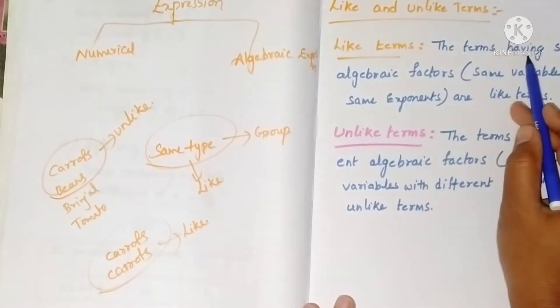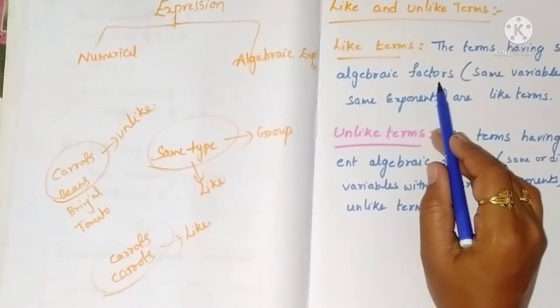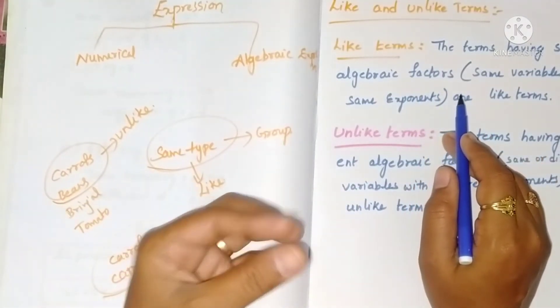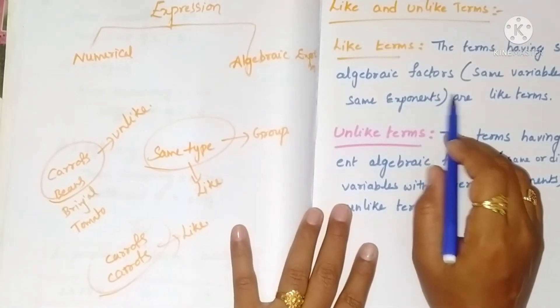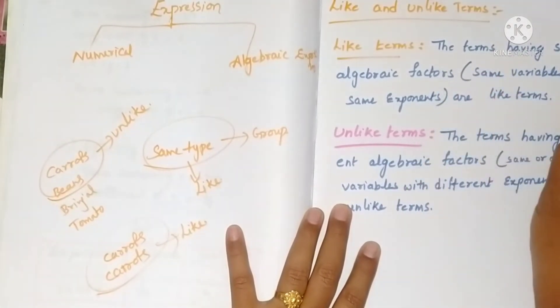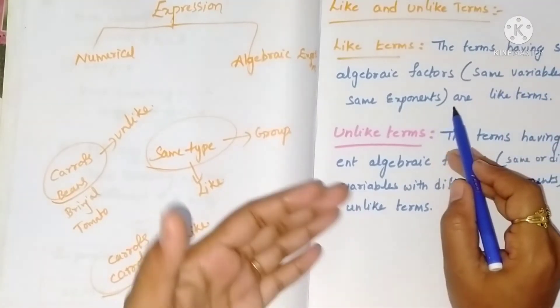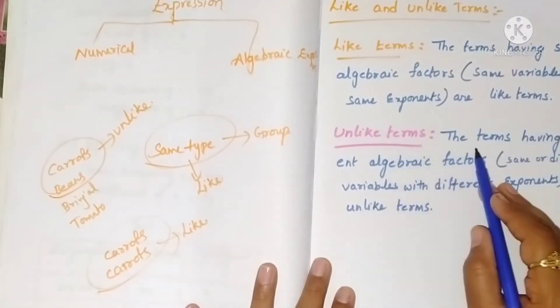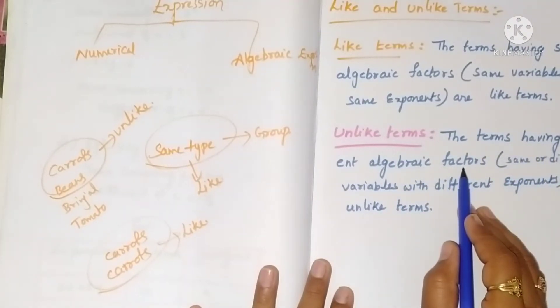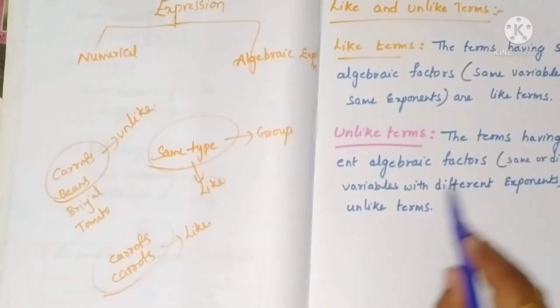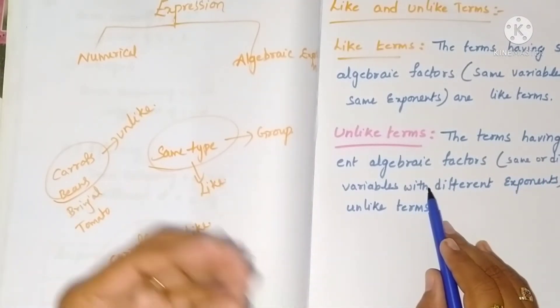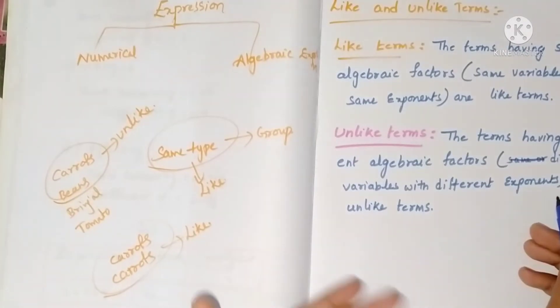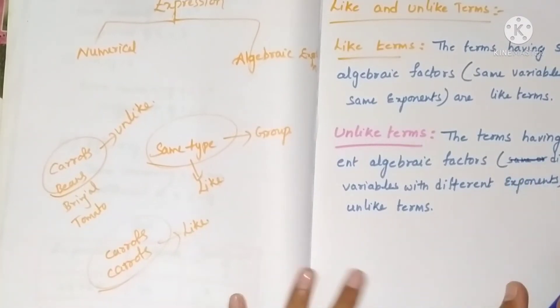The terms having same variables with same exponents are like terms, while the terms having different algebraic factors - that means same or different variables but with different exponents, or simply different variables with different exponents - are unlike terms.